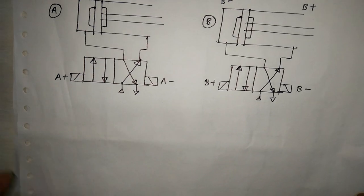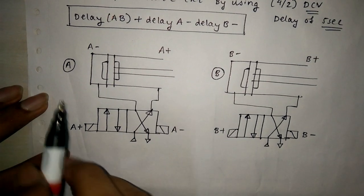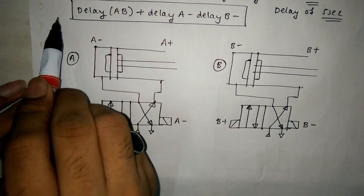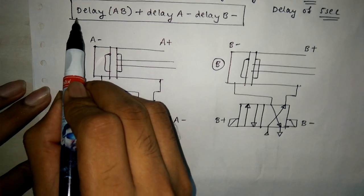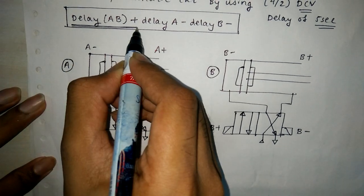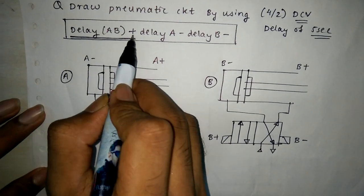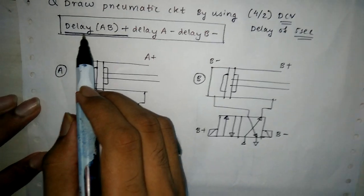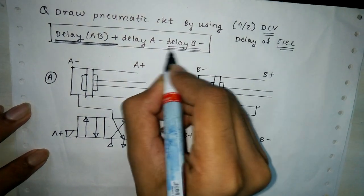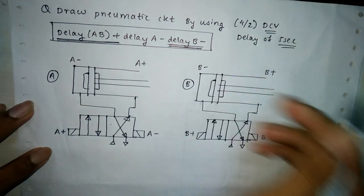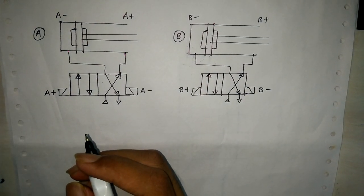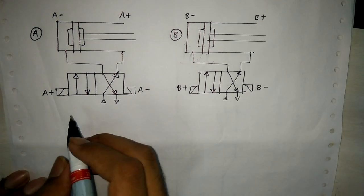We have to start directly from the output term. The starting term is delay AB — this whole term is one term. Delay AB+ means the previous term is delay B-. This whole key is your term. We have to draw the symbol of delay, which is very complicated.